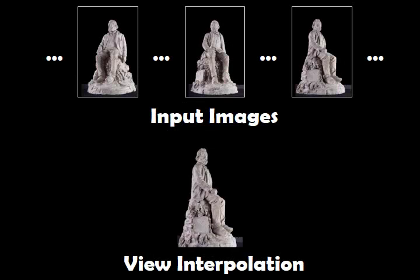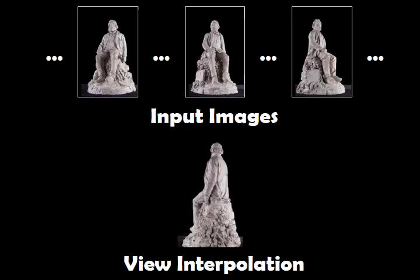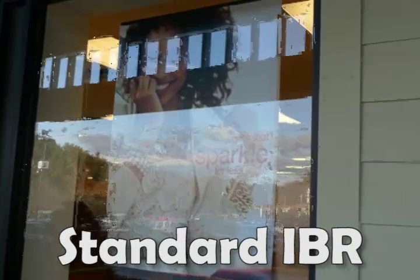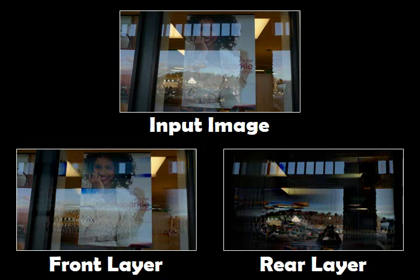Image-based rendering in the gradient domain. Image-based rendering can synthesize photorealistic in-between views for a set of input images with estimated depth maps. Unfortunately, standard image-based rendering methods break down with scenes that contain both reflected and transmitted light, since depth maps cannot represent two different motions. This results in ghosting artifacts.